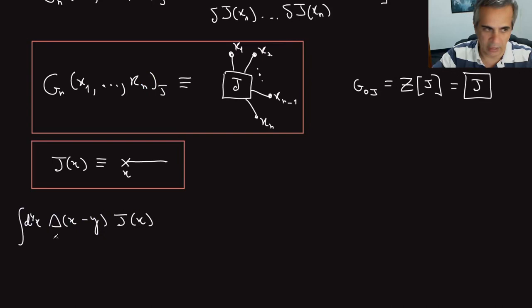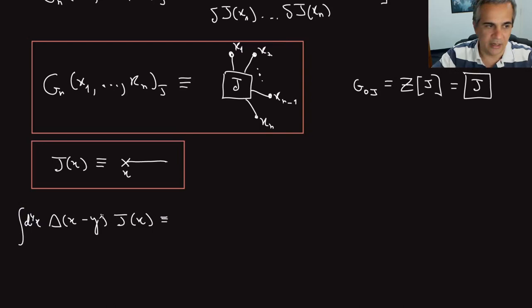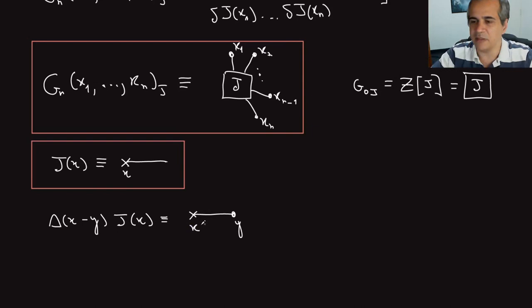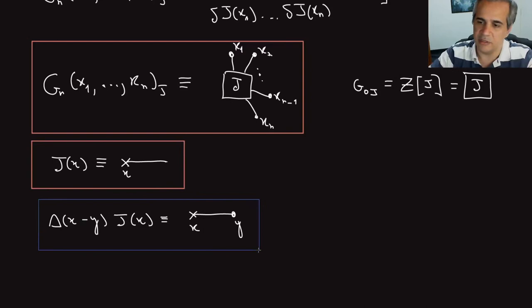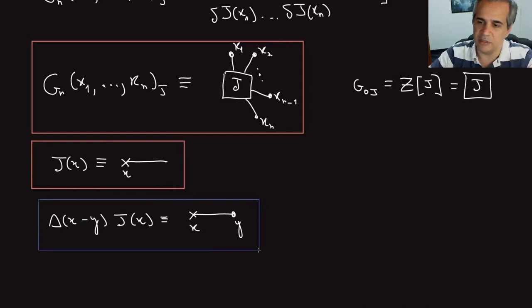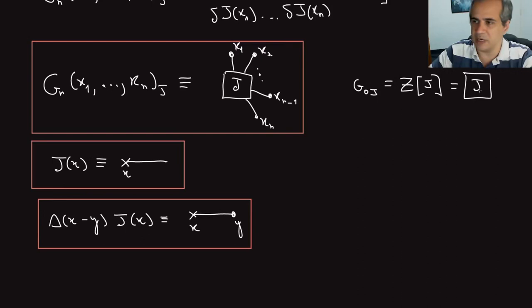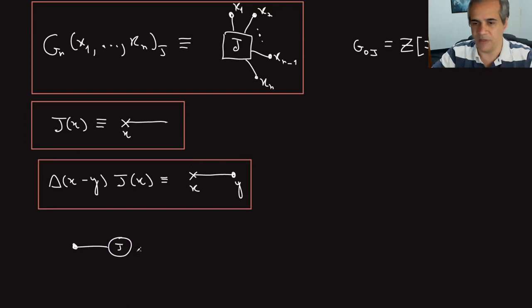I also define the action of the source J[x] diagrammatically. A propagator contracted with a source gives a scalar product — integrated over all spacetime — that depends only on the remaining variable y. I use a circle to indicate any connected diagram, in contrast to the box which means all diagrams. When I have a box, it means all diagrams; when I have a circle, it means only the connected ones.